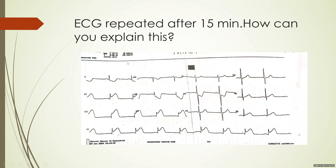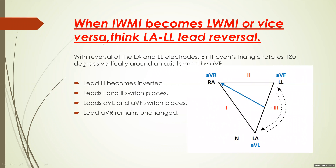When inferior wall MI becomes a lateral wall MI — or vice versa — think of left arm and lower limb lead reversal. That's the answer. When inferior wall MI becomes a lateral wall MI or lateral wall MI becomes inferior wall MI, think left arm–lower limb lead reversal. This is Einthoven's triangle, with aVR, aVF, and aVL, along with the right arm, lower limb, and left arm electrodes.